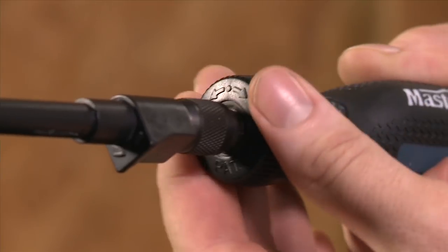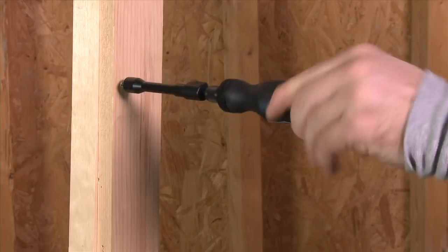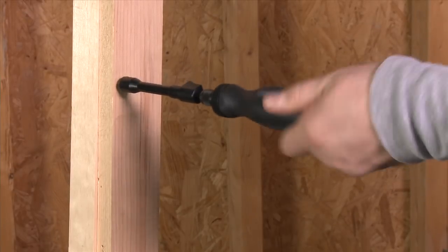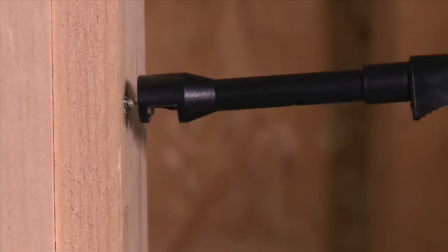The reversible ratchet drive lets you drive screws with one hand. You can drive screws quickly because the bit stays in contact with the screw.